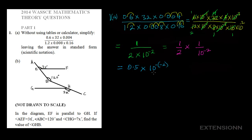The law of indices states that when you have 1 over A raised to power C, this can also be written as A raised to power minus C — you just bring in a negative sign on the power. It's very important when you sit for an exam that you explain what you are doing, like this.